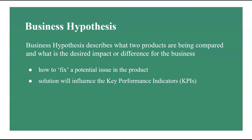The final task in the first step of the A/B testing process is to state a statistical hypothesis based on the business hypothesis and chosen primary metric. A/B testing should always be based on a hypothesis that needs to be tested. In the fundamentals to statistics section of this course, lecture number seven, we go into detail about statistical hypothesis testing including what the null hypothesis is and what the alternative hypothesis is.